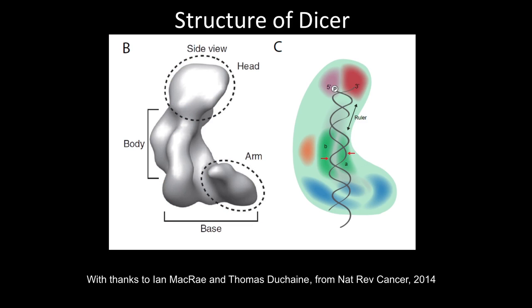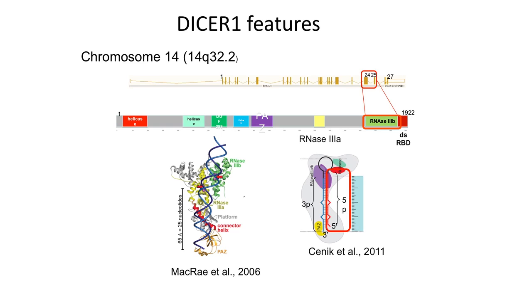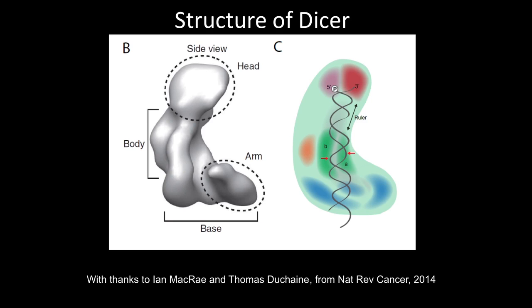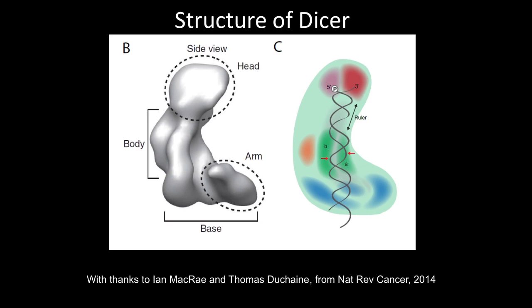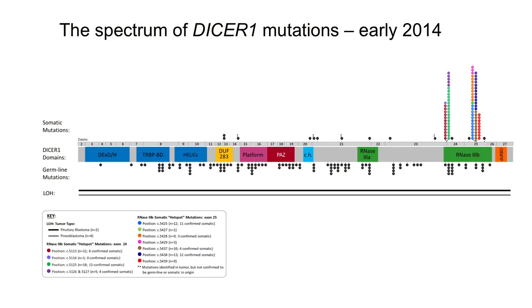This is what DISA looks like now — work done by Ian McRae. It's thought to have this structure rather like a homunculus with a head and a body and an arm pointing out. That's the 3D structure with RNAs 3A and 3B and the PAS domains at the top. In 2014, what we knew was that germline mutations were scattered along the gene, while somatic mutations really clustered in the 3B region.